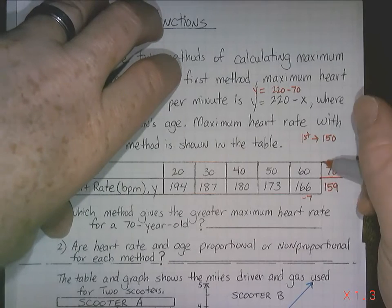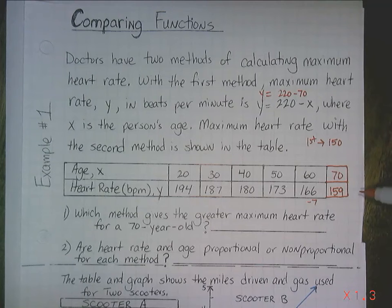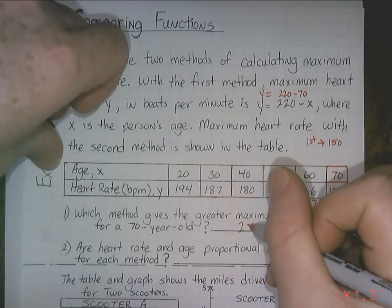So the second method says a 70-year-old will have a maximum heart rate at 159 beats per minute. So which method gives you a greater maximum heart rate, the first method or the second? In this case, it's going to be the second method.